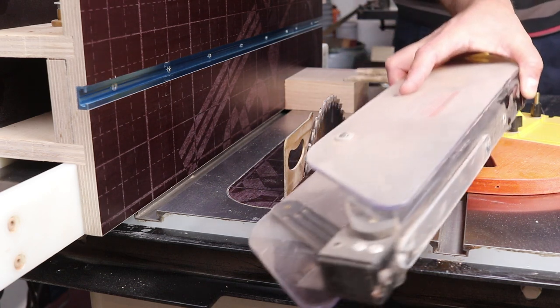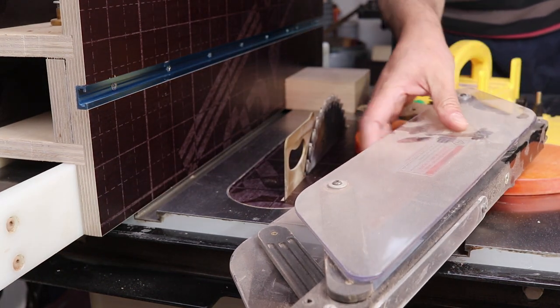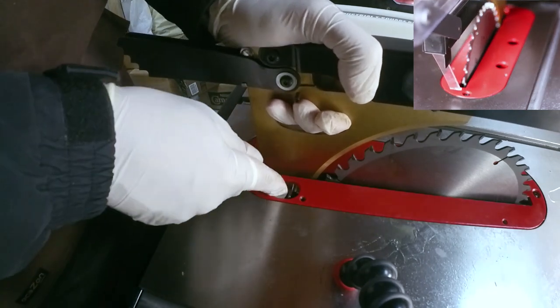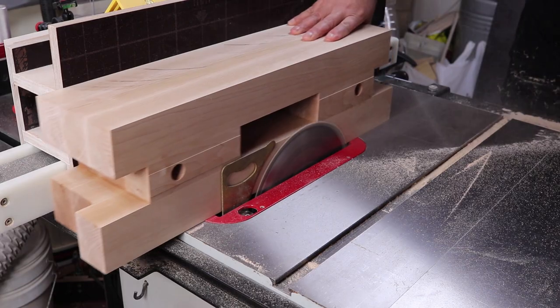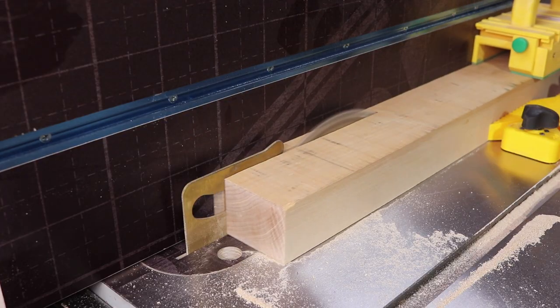In most situations you can use the blade guard for more protection. Still there are some cuts that you cannot make on the table saw with the blade guard installed. Rather than these I prefer to use it.